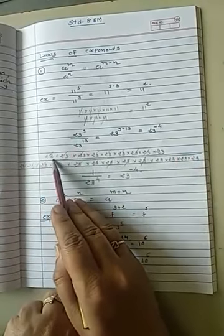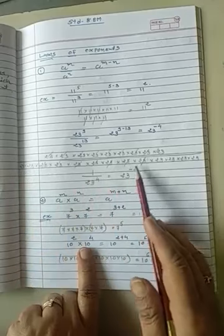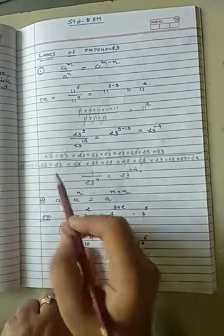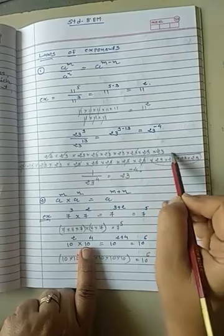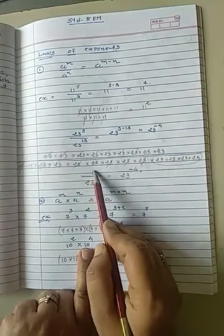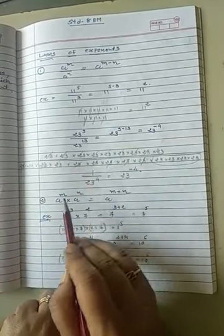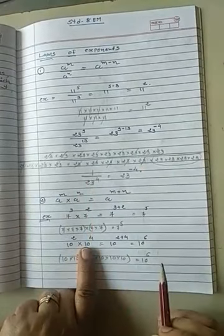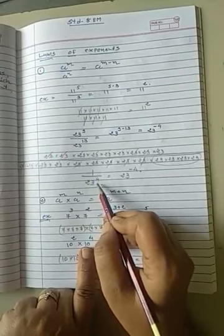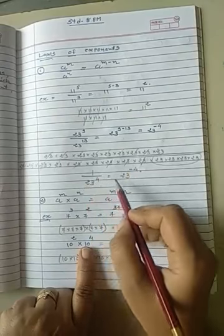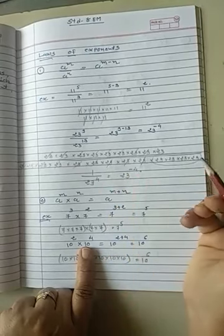I have explained the method below. 23 raised to 9, so 9 times 23 will come in numerator. And 23 raised to 13, so 13 times 23 will come in denominator. Then 9 times 23 cancel, so denominator will have 4 times 23. That's why 1 upon 23 raised to 4 will come. So it is same as 23 raised to minus 4.